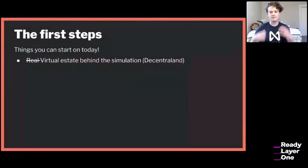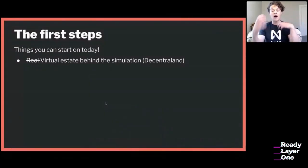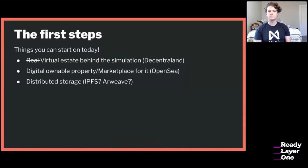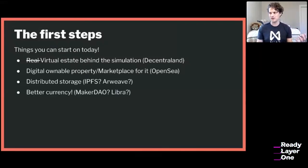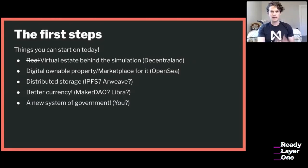How do you buy and sell things? How do you develop ownership? Digital ownable property — OpenSea is working on a marketplace for this, and there are plenty of NFTs. Distributed storage — IPFS is one example. There's even a startup working on consciousness cold storage. Better currency — everyone knows we need this right now. When the economy is struggling, it's clear we need something not bound to nation states. Will it be Libra, MakerDAO, or Bitcoin?